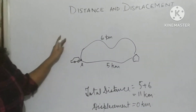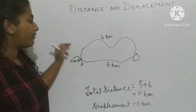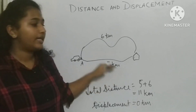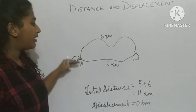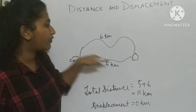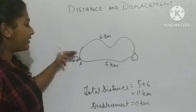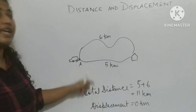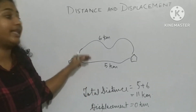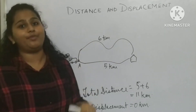To summarize: the distance travelled is the total length of the path travelled, and the displacement is the shortest distance between the initial and the final positions.